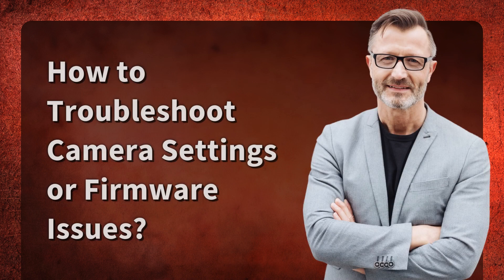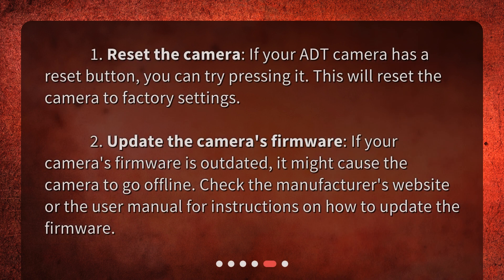How to troubleshoot camera settings or firmware issues: 1. Reset the camera. If your ADT camera has a reset button, you can try pressing it — this will reset the camera to factory settings. 2. Update the camera's firmware. If your camera's firmware is outdated, it might cause the camera to go offline. 3. Check the manufacturer's website or the user manual for instructions on how to update the firmware.